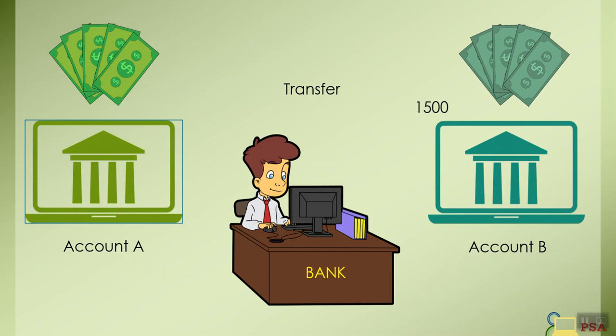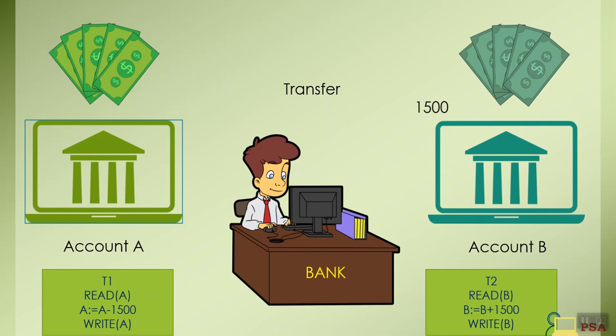Here we can divide this transaction T in two parts T1 and T2 where T1 will be responsible for deducting the amount from account A whereas T2 will be responsible for crediting the amount in account B. So first in T1 what we'll be doing is we'll fetch the current account balance of account A then we'll deduct 1500 rupees and then we'll update the balance of account A. Now till here what has been done is bank employee has deducted the amount from account A and the next thing that is to be done is to credit the same amount in account B.